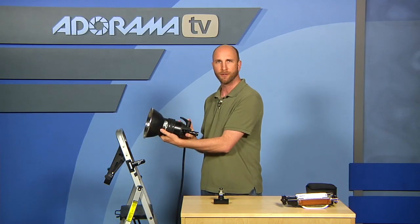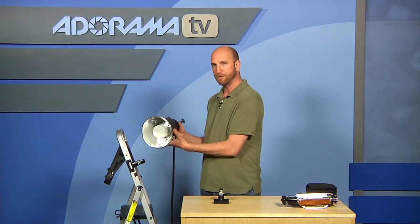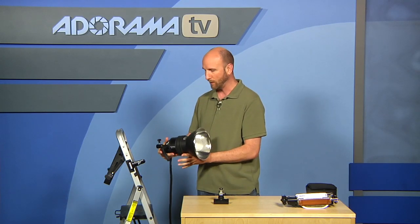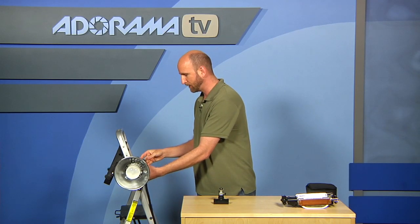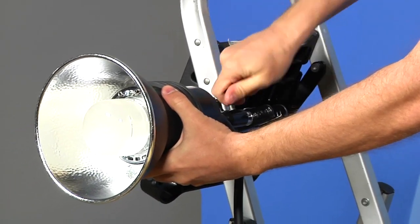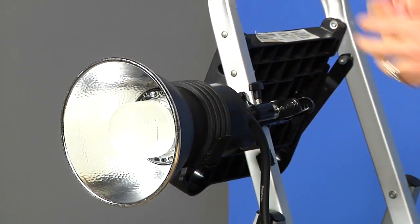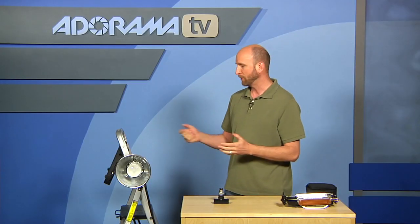So I'm going to clamp that right to the side of this ladder. And then here's my Profoto. This is an Acute head, a D4 head. This is what's going to be a normal weighing studio light. And I'll stick this right on there, tighten it down. And you can see just like that, we have our Profoto head on there.